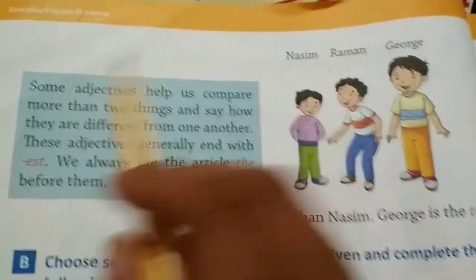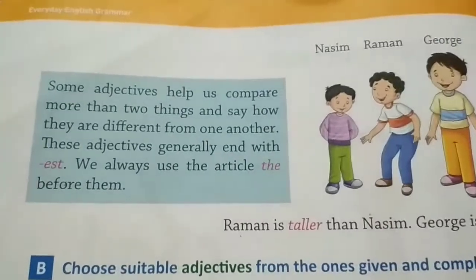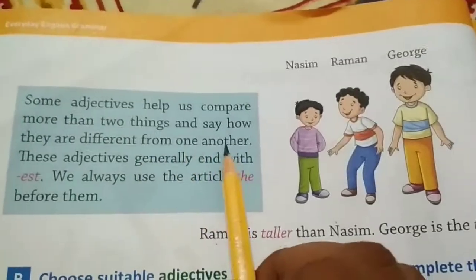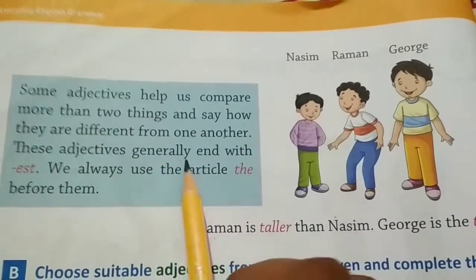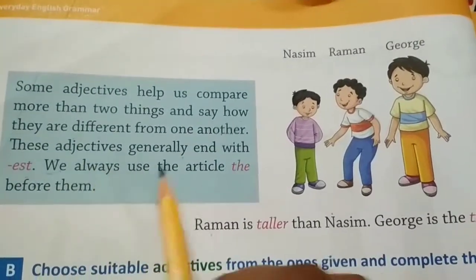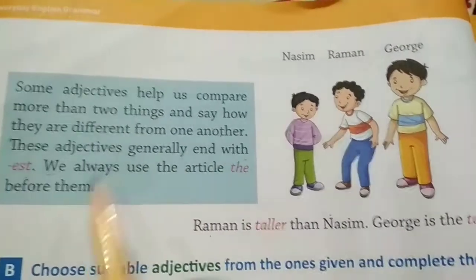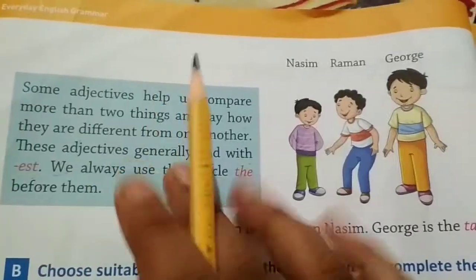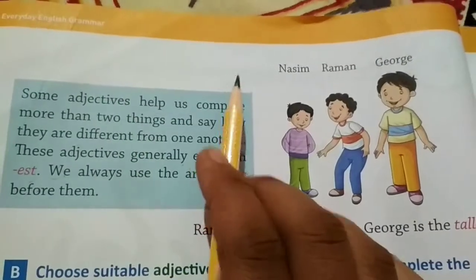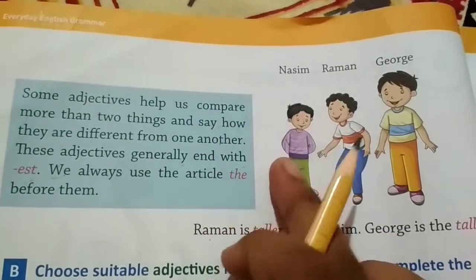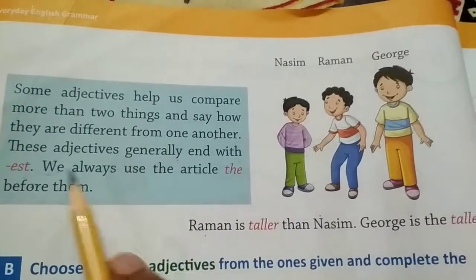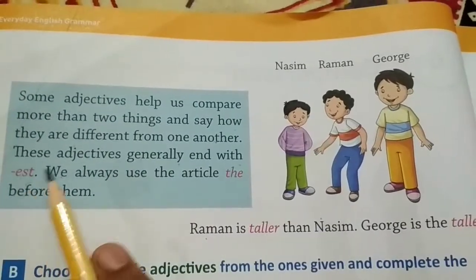Some adjectives help us compare more than two things and say how they are different from one another. These adjectives generally end with -est. We always use the article 'the' before them. Comparison happens with two things, but some adjectives compare three or more than three things, so they end with -est.